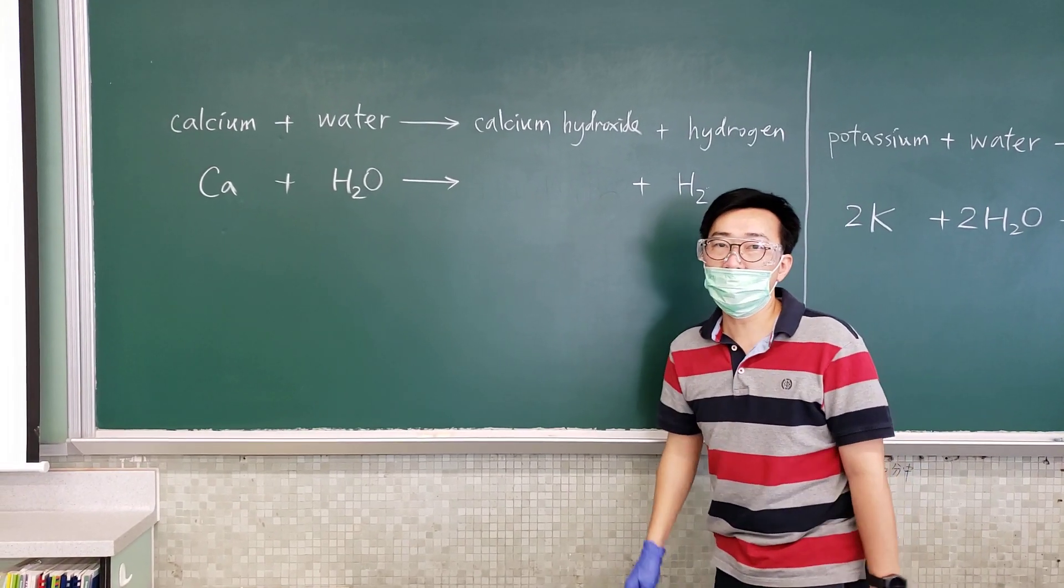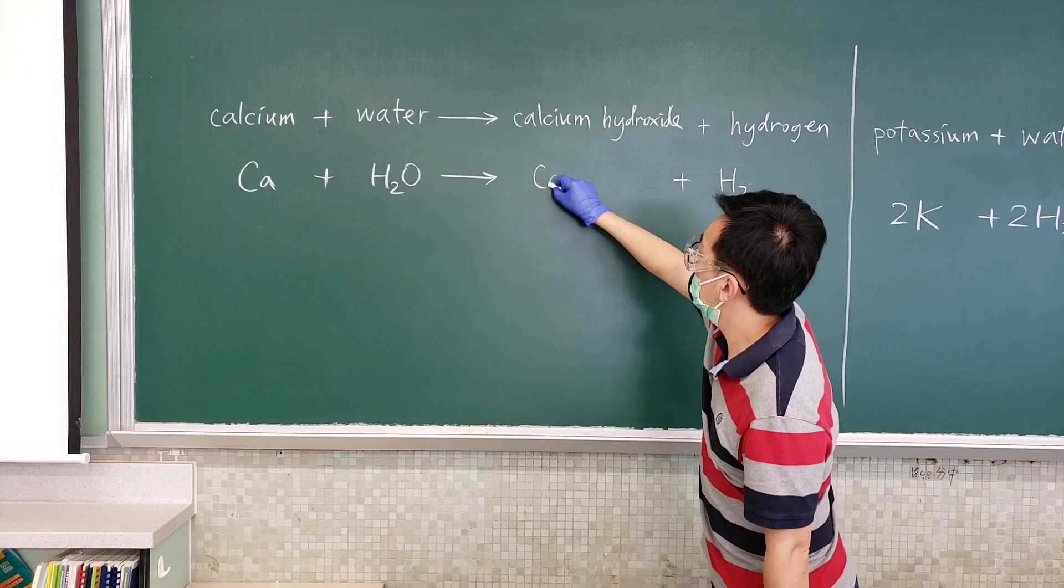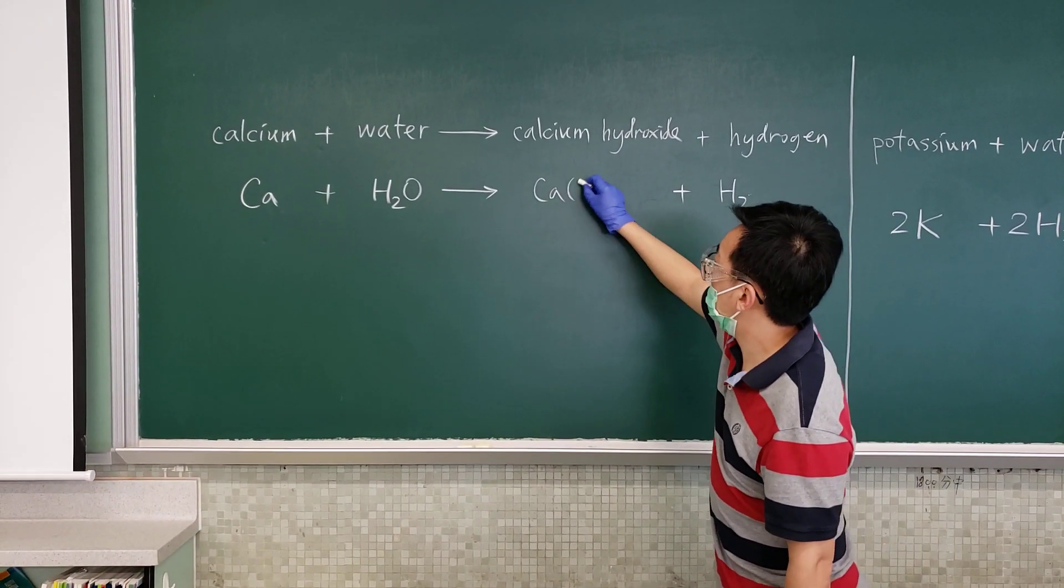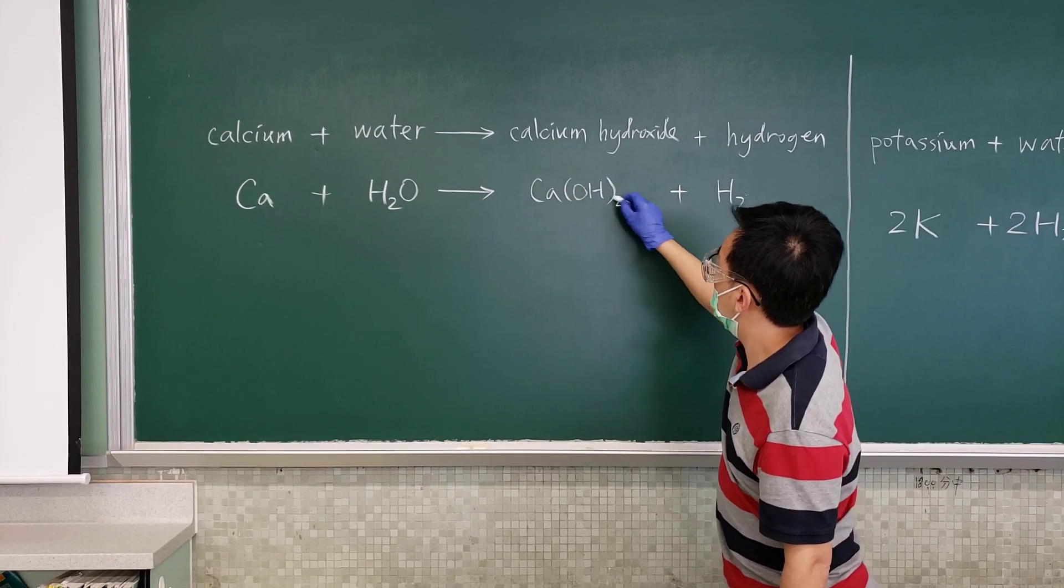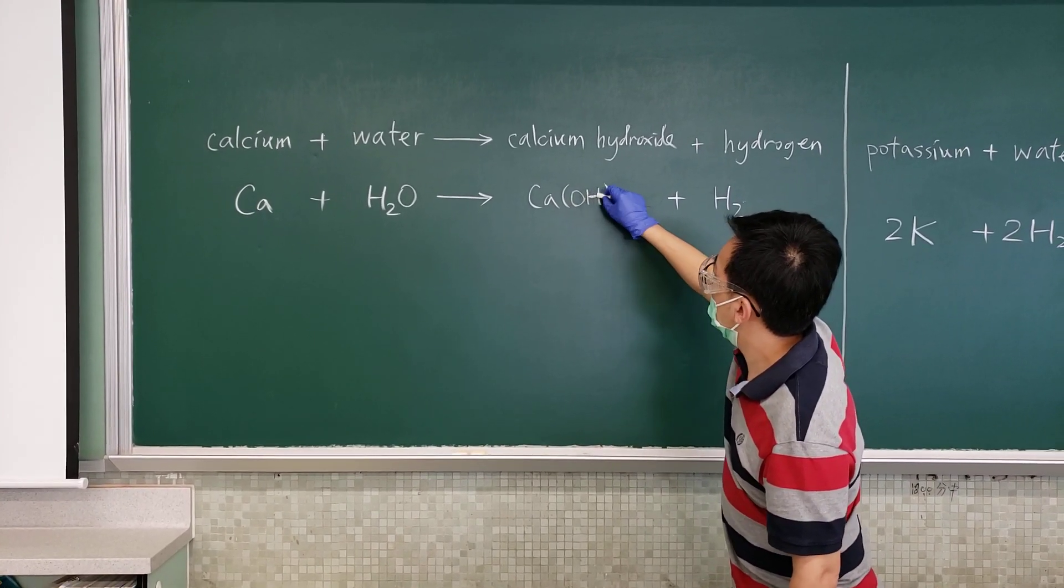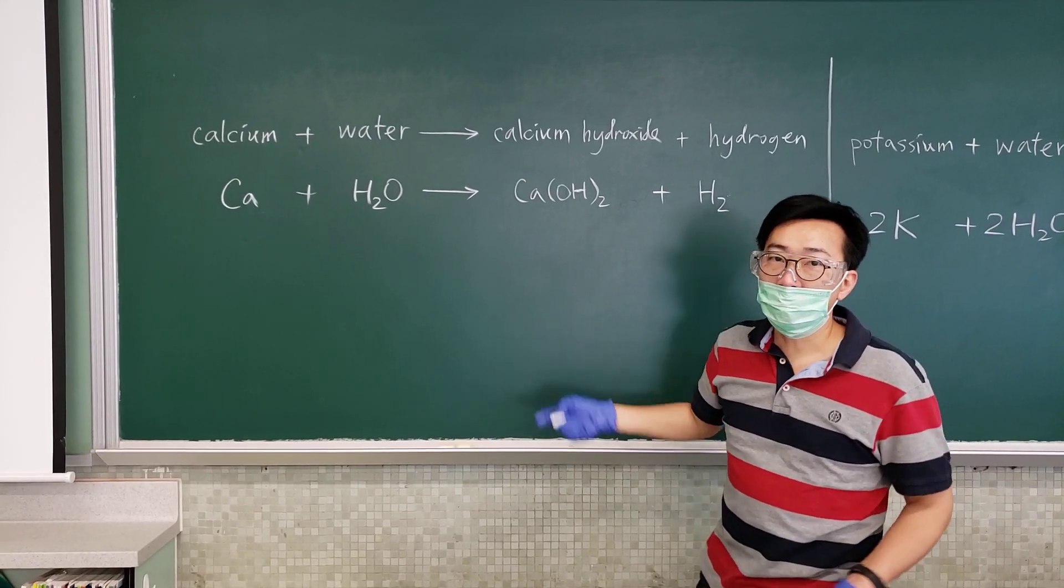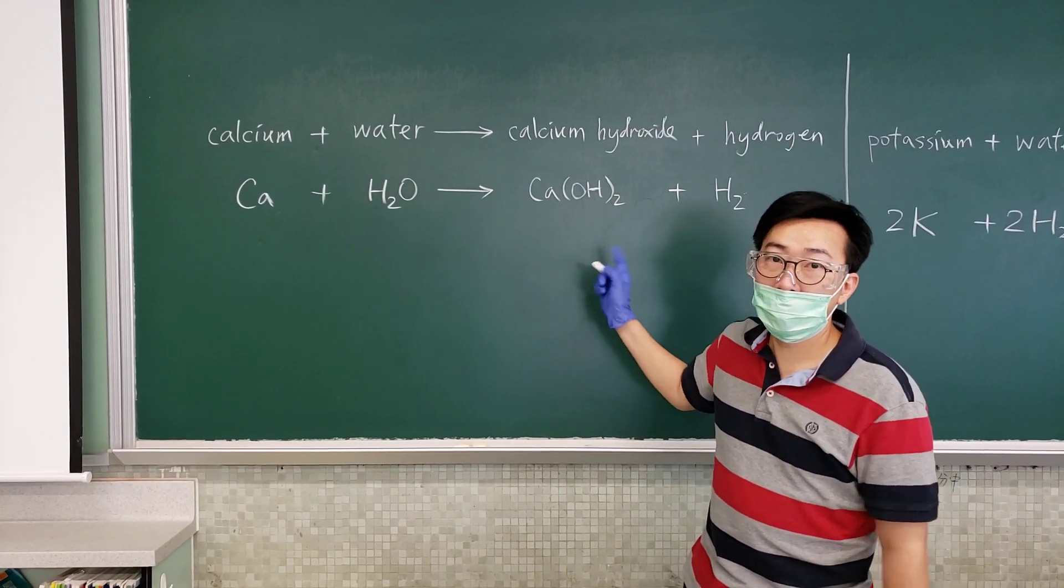What is calcium hydroxide? The formula? Ca and then OH. Actually, Ca(OH)2. So the chemical formula for calcium hydroxide is different from that of sodium hydroxide. Ca bracket OH2.